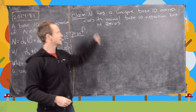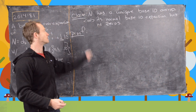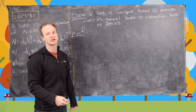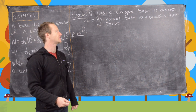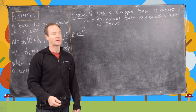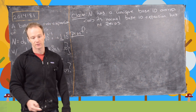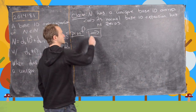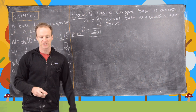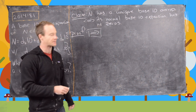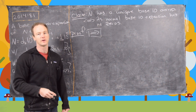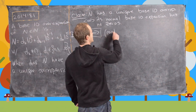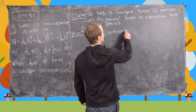Here's our claim which will solve this problem: n has a unique base 10 over-expansion if and only if its normal base 10 expansion has no zeros. We're going to prove the forward direction first using the contrapositive, motivated by the examples we just looked at.